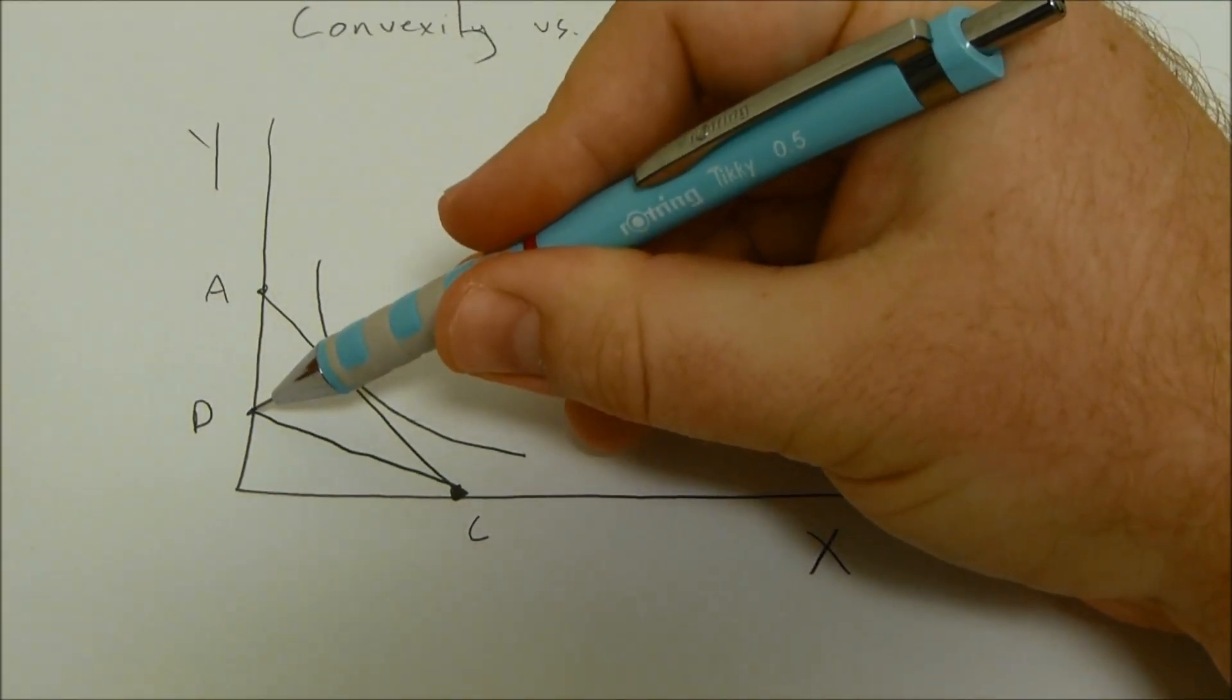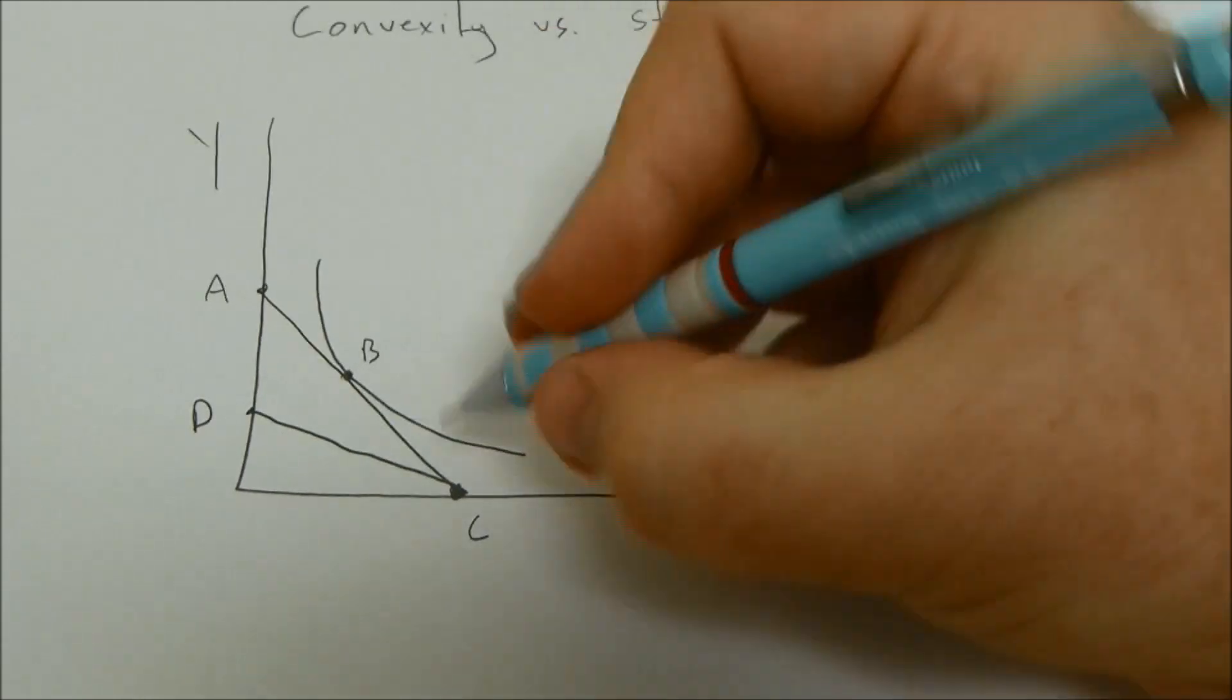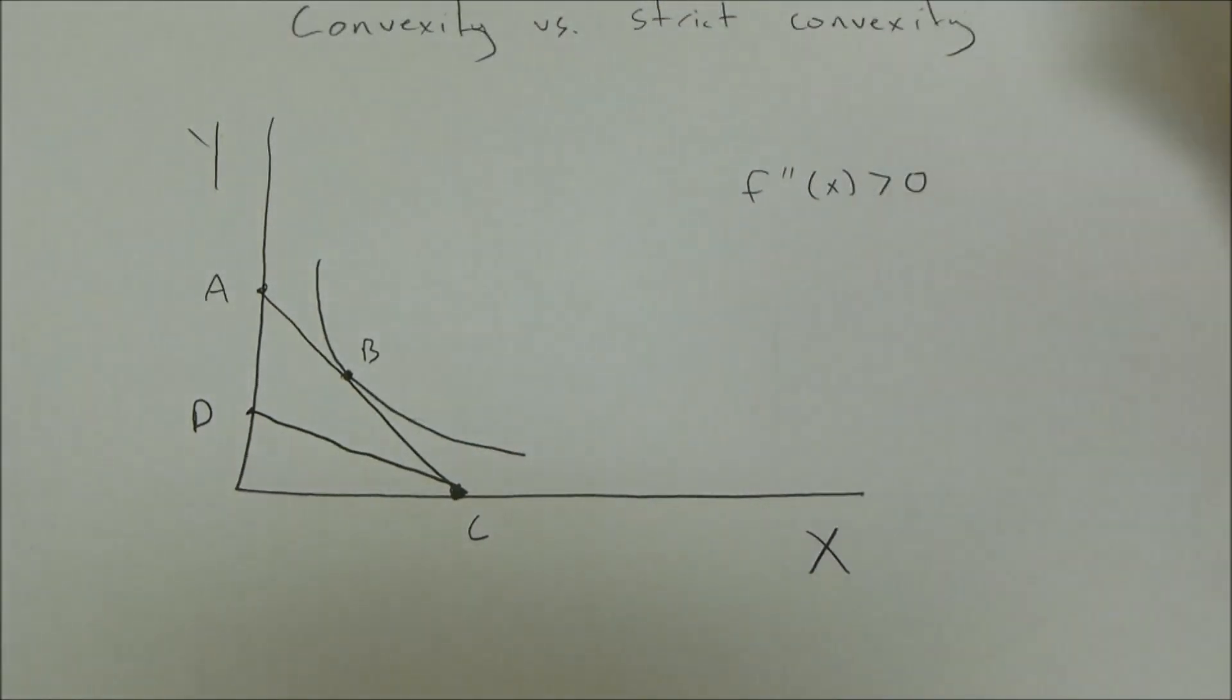You'll also notice that when we have a linear indifference curve, we consume only one of the goods. This is not an interior solution.